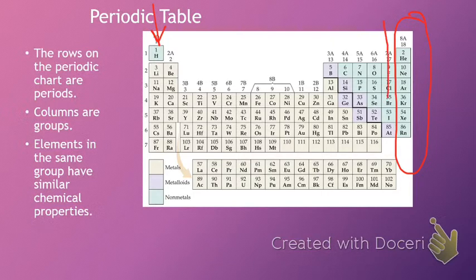So, for example, everything in this family here, you'll find out has very specific properties. In fact, in organic chemistry, next year, you're going to use this family, the Halogens, a lot.